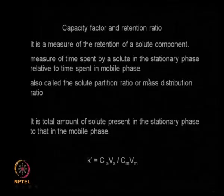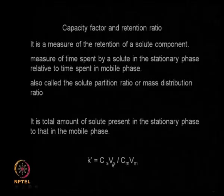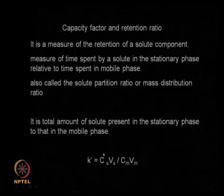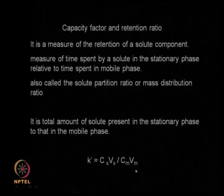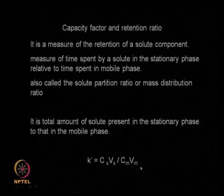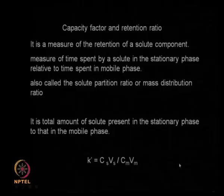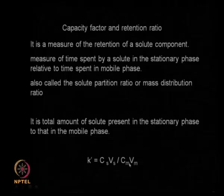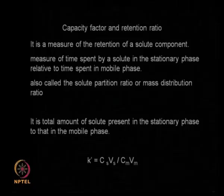The capacity factor is given by the total amount of solute present in the stationary phase divided by the total amount in the mobile phase. Total amount equals concentration times volume, so it is C_s × V_s divided by C_m × V_m. This is a measure of the time spent by the solute in the stationary phase versus the mobile phase. If it spends more time on the stationary phase, the capacity factor is high; if more time in the mobile phase relatively, the capacity factor goes down.